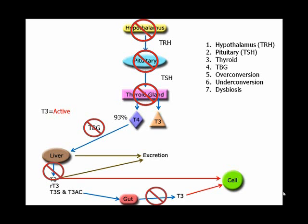You can also have dysbiosis in your gut, meaning an imbalance of good to bad bacteria, so you don't have adequate amounts of good bacteria to convert T3 sulfate and acetic acid into T3.